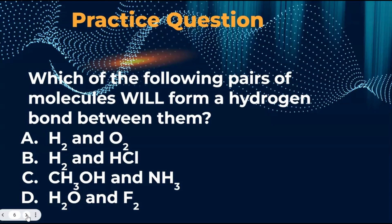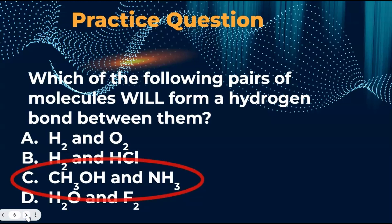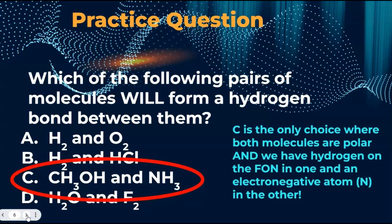Okay, let's do a practice question. Which of the following pairs of molecules will form a hydrogen bond between them? Pause the video, think about it, come up with an answer. Unpause to check your solution. Okay, the answer is C. In this choice we see an alcohol CH3OH and ammonia NH3. Now first of all, both of these molecules are polar. The other choices don't have this feature. Beyond that we see that we have hydrogen on the phone. In the alcohol molecule hydrogen is directly bonded to O and in the neighboring molecule we do have the very electronegative N. Thank you all so much for watching.